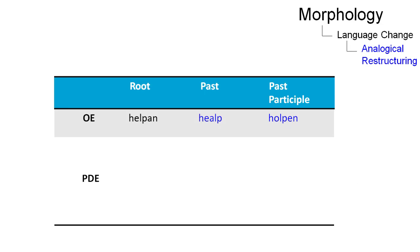For example, in Old English, the following three forms have undergone analogical restructuring so that today we only have two forms.